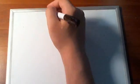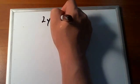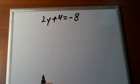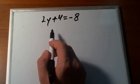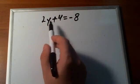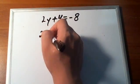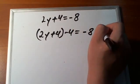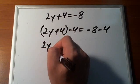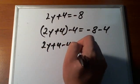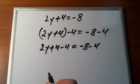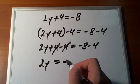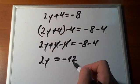Let's look at another example: 2y plus 4 is equal to negative 8. The first step is to get rid of this 4. In order to get rid of it, we subtract 4 from both sides. So we have 2y plus 4 minus 4 is equal to minus 8 minus 4. Those 4s go away, and we have 2y is equal to minus 12, since minus 8 minus 4 results in minus 12.